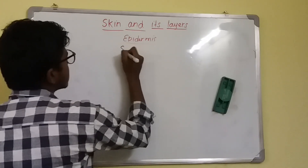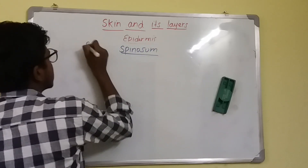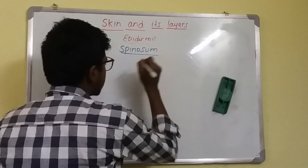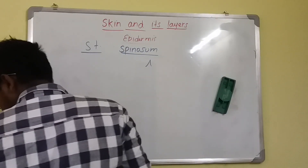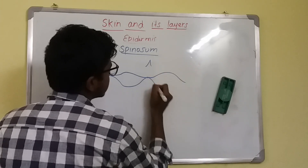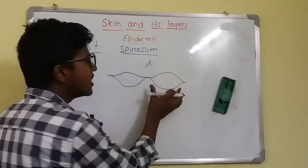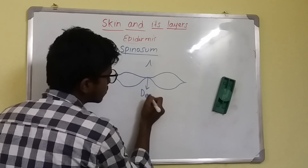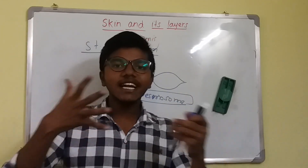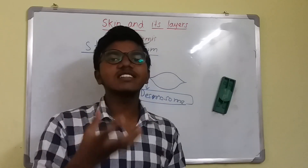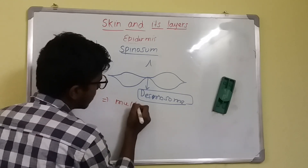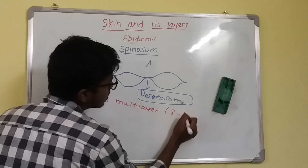The second layer is the Stratum Spinosum. As the name suggests, spino means spine — the cells have peripheral spines whose junctions are known as desmosomes. Desmosomes adhere adjacent cells and provide protection. The layer is multi-layered, normally 8 to 10 layers of cells, and the cells are known as keratinocytes. All cell layers from spinosum to corneum, except stratum basale, are keratinocytes. The cells are polyhedral in shape with prominent nucleoli and pavement epithelial-like structure.